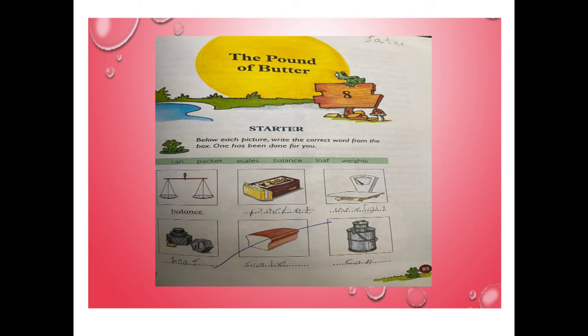The first thing we got was the balance, we identified that. Now we have a packet — a packet of butter, a packet of chocolate, and a packet of ice cream bar. The third picture is weights. This is a packet of butter, a packet of chocolate, and a packet of ice cream bar.